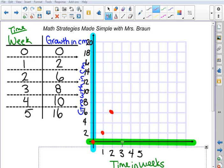On the third week, it was 8 centimeters tall. I'm going to go up to the 8. On the fourth week, it was 10 centimeters tall. And then on the fifth week, it was 16 centimeters tall. We had a growth jump there.